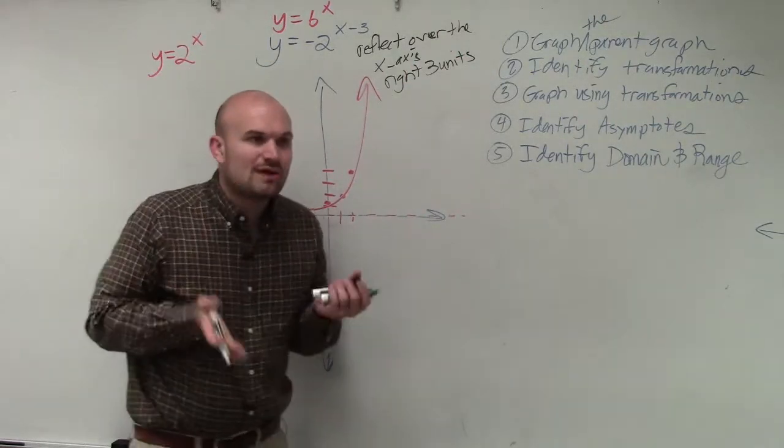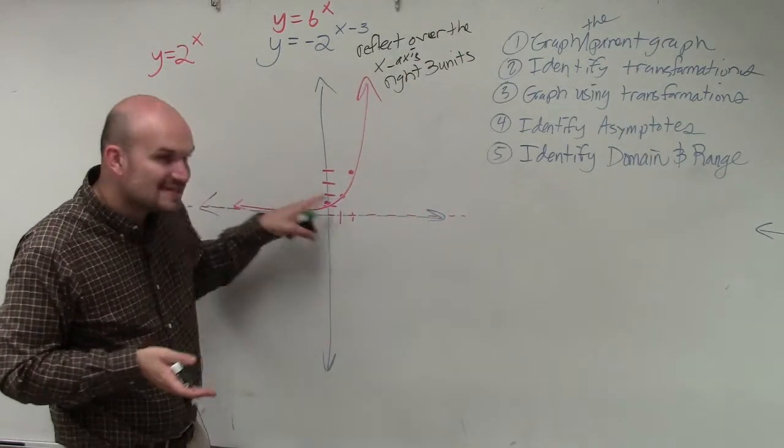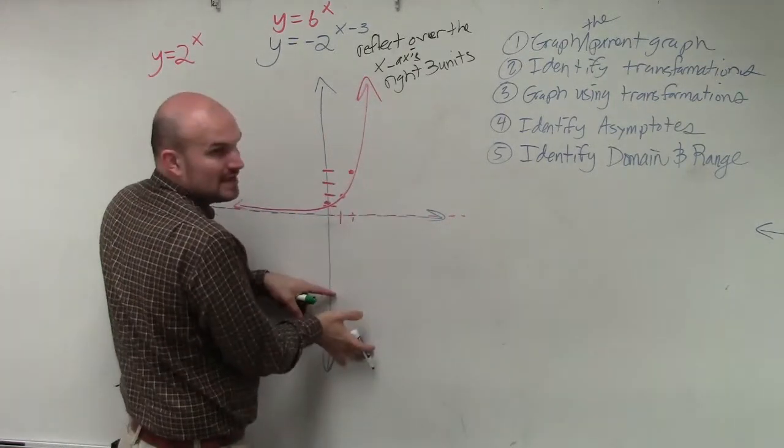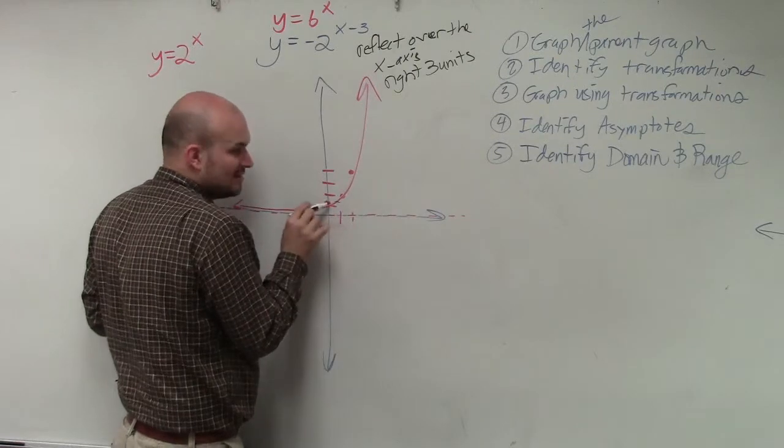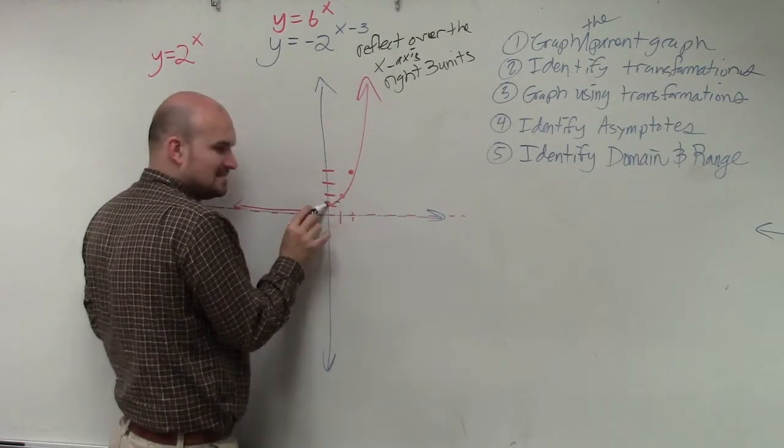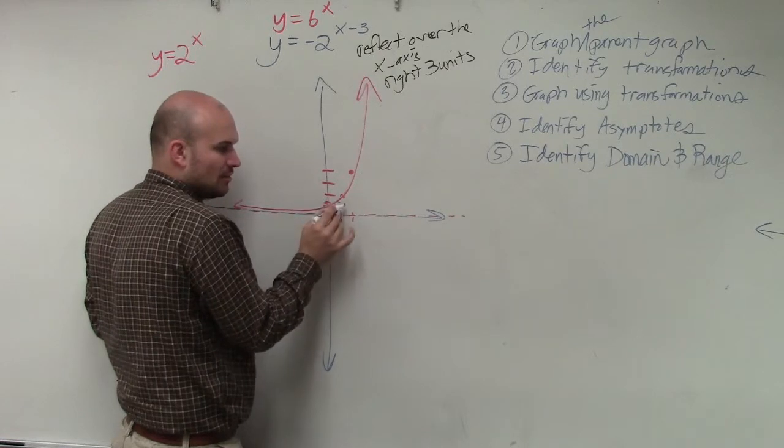The reason I say graph the parent graph is we're going to take this graph, shift it three units to the right, and then reflect it over the x-axis. I'm just going to take the y-intercept. I'm not going to move every single point. I'll take this point and move it over three units. One, two, three.